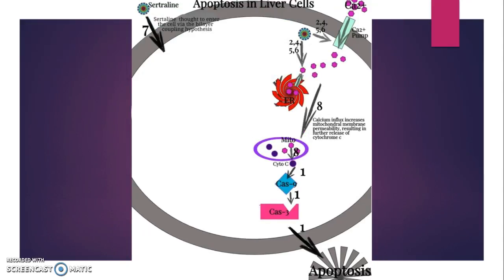In the final pathway, sertraline increases the concentration of calcium in the cytosol by causing an influx from both the cell membrane and the endoplasmic reticulum. This elevated calcium concentration increases the permeability of the mitochondrial membrane, resulting in the release of cytochrome C, which, as stated earlier, results in apoptosis.